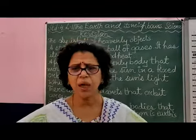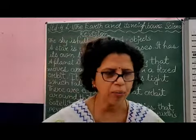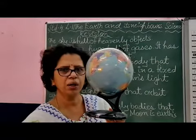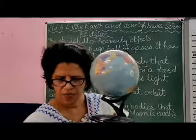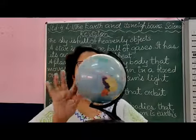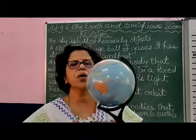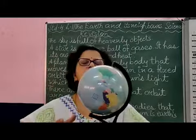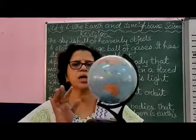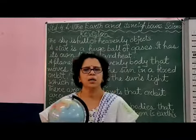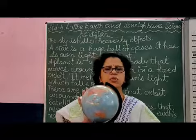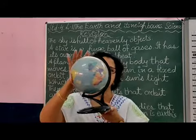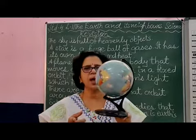Coming to the Earth — as you can see the globe in front of you, this is exactly the model of the Earth. Earth is spherical in shape and it has two movements. One is it moves on its axis, which is an imaginary line, and as you can see it is rotating — this causes day and night. It is also revolving around the sun in its own orbit, and this revolution, combined with the fact that Earth is tilted, causes different seasons.